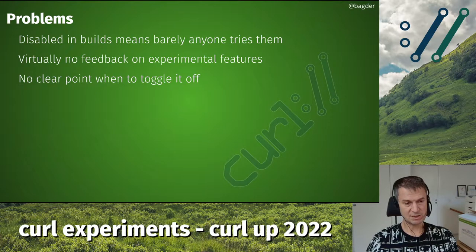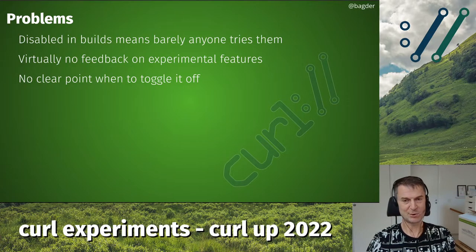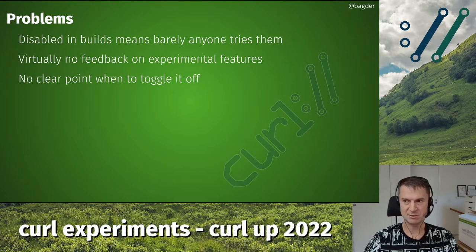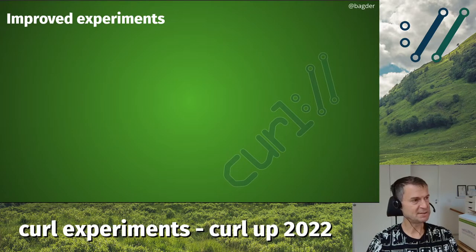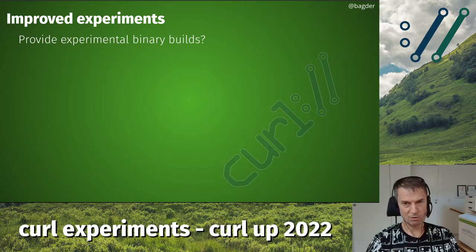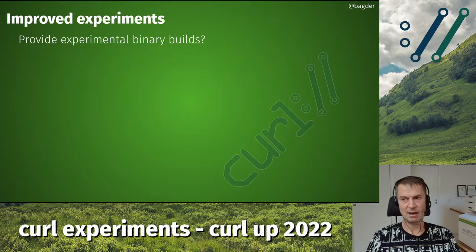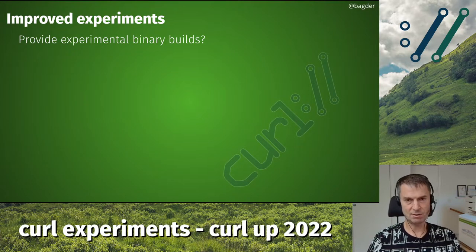That gives us very little information — when do we conclude that the experiment is successful? Nobody tells us anything, so eventually we just say, hey, it's been half a year, it's been a year, maybe we should just toggle it off. It's not a very effective way to run experiments. One thought: maybe we should provide binary builds with experimental features enabled, to make it easier for average users to download and run an experimental binary.